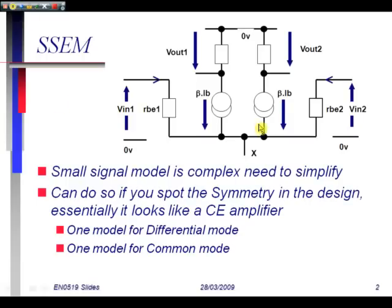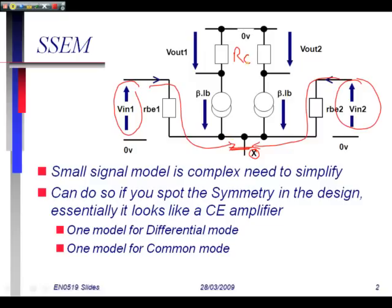If we consider the small signal equivalent model for the design, we have an input on one side and an input on the second side. These currents are going to come in to node X. We also have our effective values of RC.